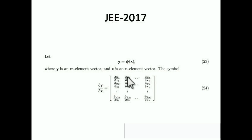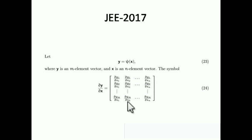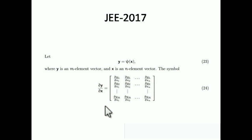The differentiation of y with respect to x is written as: first column — dy1/dx1, dy2/dx1, up to dym/dx1; second column — dy1/dx2, dy2/dx2, up to dym/dx2; and so on up to the last column — dy1/dxn, dy2/dxn, up to dym/dxn. This is the differentiation of a matrix — very rarely asked but a very simple thing.